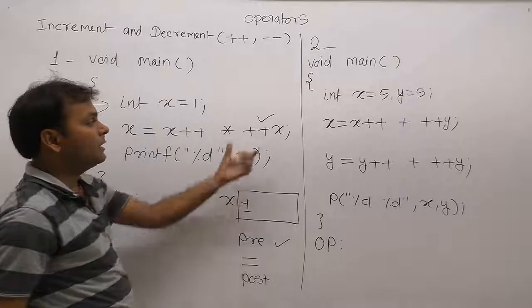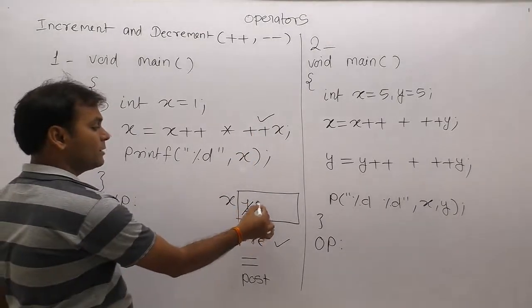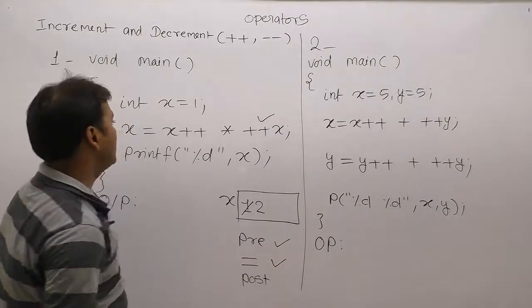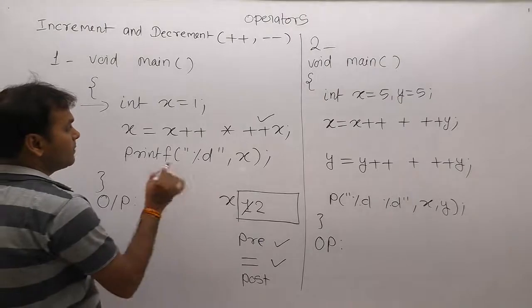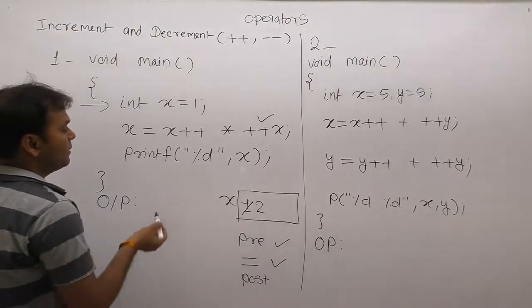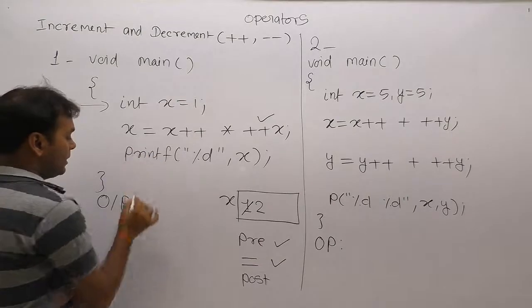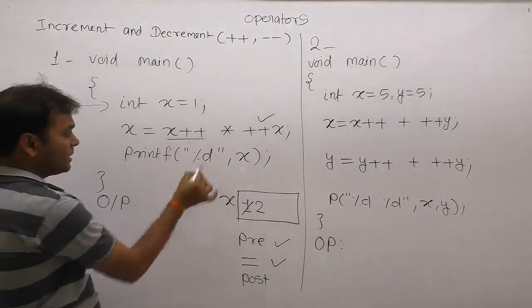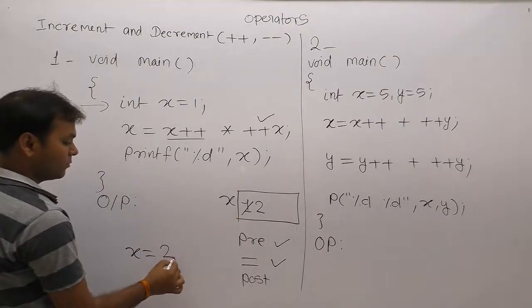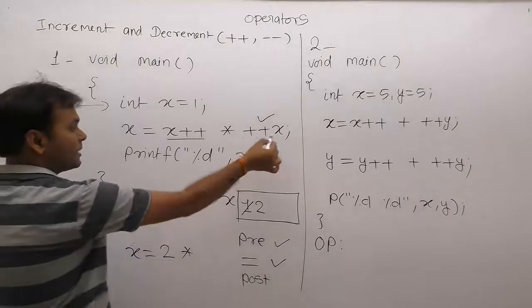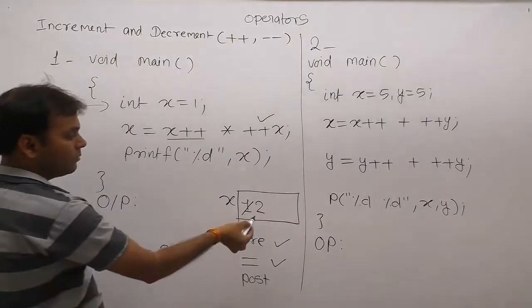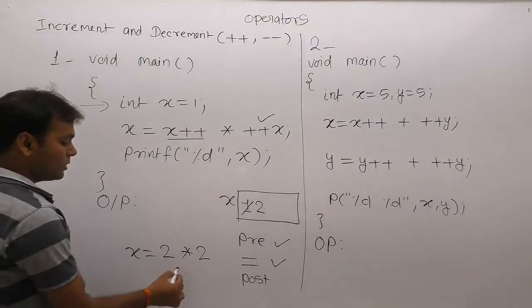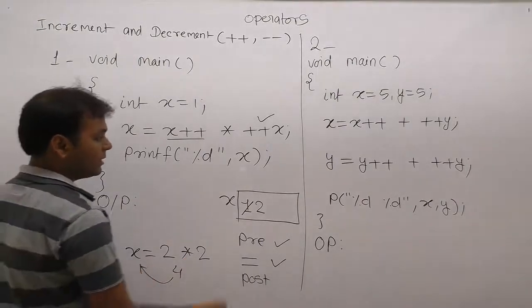Variable x is incremented one time by pre-increment, so x becomes 2. After that, for the assignment step, all occurrences of x are replaced by the current value of x, which is 2. So x++ is replaced by 2 and ++x is also replaced by 2, giving us 2 multiplied by 2 equals 4. x is now assigned 4.